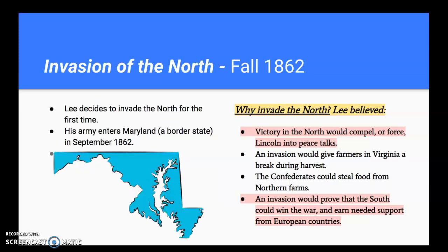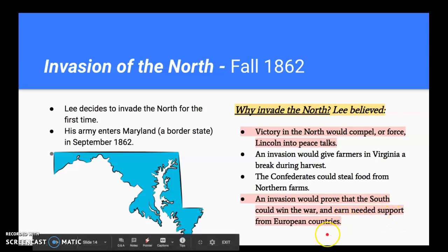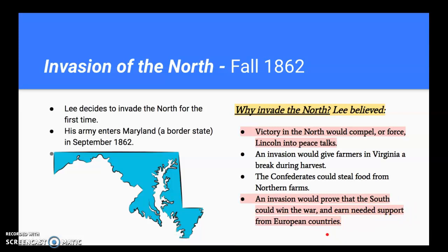Lee decides that now that he's had success in Virginia, he's going to try to invade the north for the first time. Why would he want to invade? Remember, their strategy was to be defensive armies. So why go offensive? He thinks a victory in the north would compel Lincoln into peace talks. An invasion would also give Virginia farmers a break during harvest, the Confederates could steal food from northern farms, and it would prove the south could win the war. If they did that, they would earn recognition, support, and respect from European countries — namely France and Britain — just as the colonies had depended on French assistance in the War of Independence.